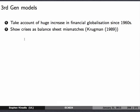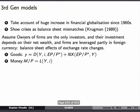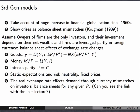Third generation models have to take account of the huge increase in financial globalization since the 1960s. This literature, due to Krugman, shows crises as balance sheet mismatches. Assume that owners of firms are the only investors, their investment depends on their net wealth, and firms are leveraged partly in foreign currency — in other words, they borrow money from abroad. That means the balance sheet is affected by exchange rate changes. The demand for goods Y is given by output, the interest rate, the expected price level over the actual price level, and net exports. Money supply is just an LM curve: M over P equals L(Y, I). There's interest parity, static expectations, and risk neutrality. What Krugman shows is that the real exchange rate affects demand through currency mismatches on investors' balance sheets for any given price.